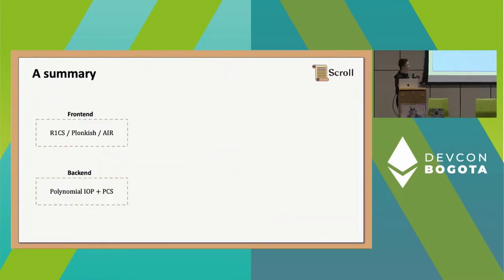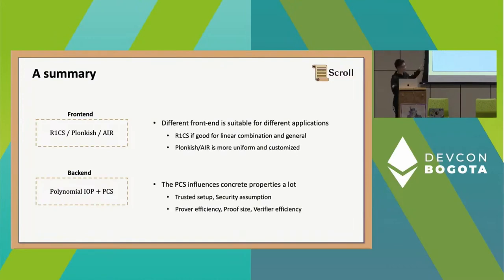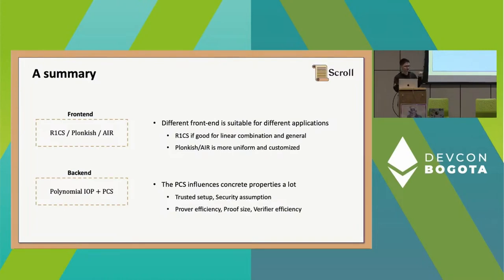As a summary, for commonly used zero-knowledge proof systems you have a front-end and a back-end. On the front-end you have R1CS, Plonkish, and AIR. On the back-end you usually use polynomial IOP plus a polynomial commitment scheme. A quick note on the advantage of R1CS: it's really good for linear combination. I'm specifically talking about Groth16 here — for example, Marlin or Spartan or other backends that also support R1CS are different because their complexity relies on the sparsity of the matrix. R1CS is also more general since each constraint can access any witness cell via linear combination without needing permutation.